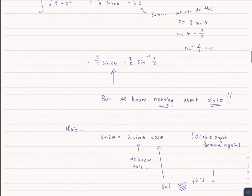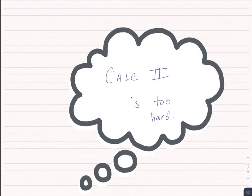I do know that sine of 2 theta equals 2 sine theta cosine theta. And I know sine theta, but I don't know cosine theta. However, at least it's now the same angle — not 2 times something, just cosine of theta. To figure that out, we're going to go back to triangles, like we did back in pre-calculus. And it's actually going to help us solve this.